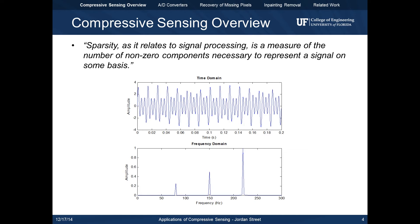Another term key in compressive sensing is sparsity. A sparse signal is one in which there are few non-zero components. The signal shown is dense in the time domain, yet sparse in the frequency domain.